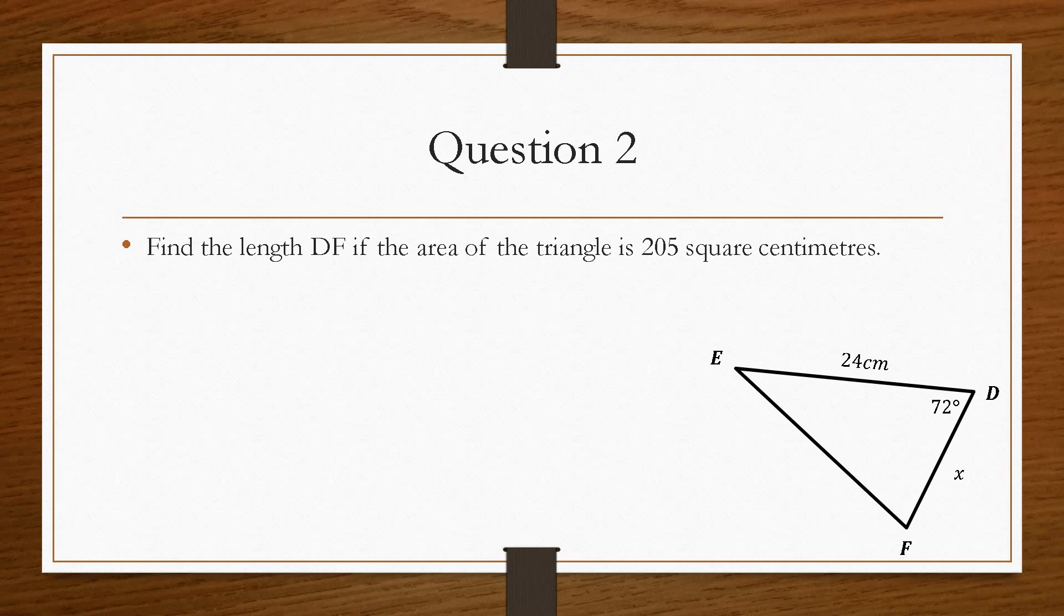Question two says find the length of DF if the area of the triangle is 205 square centimetres. This one is working backwards. We're given the area and need to work out a length. The first step is to always write down the formula, and that way we can work out the information we have and the information we need to find.